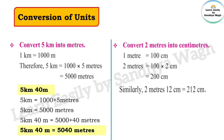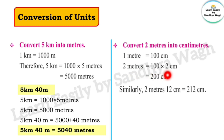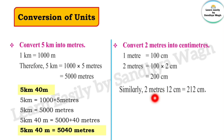Next, convert 2 meters into centimeters. We know 1 meter is equal to 100 centimeters. So 2 meters is equal to 2 multiplied by 100, which gives 200 centimeters. Similarly, 2 meters and 12 centimeters means 200 centimeters plus 12 centimeters, so the answer is 212 centimeters.